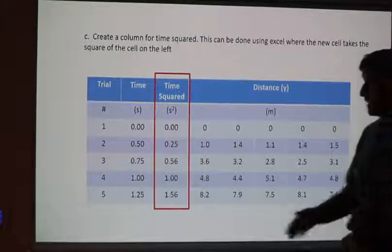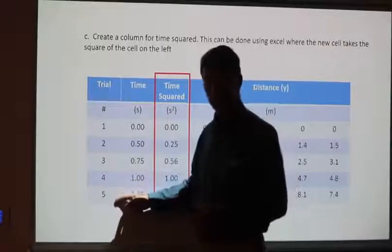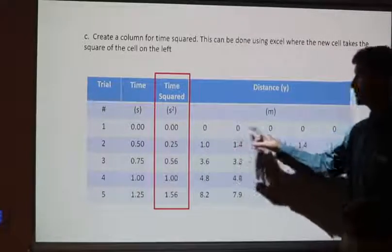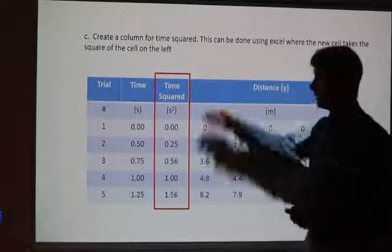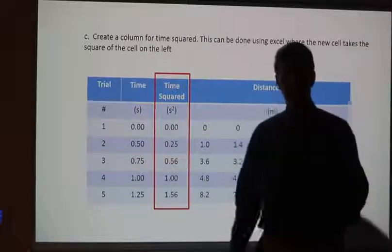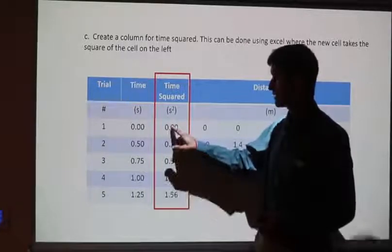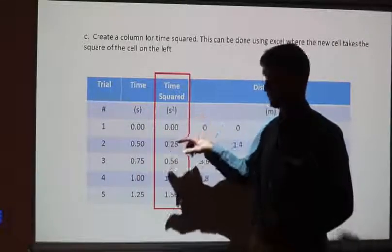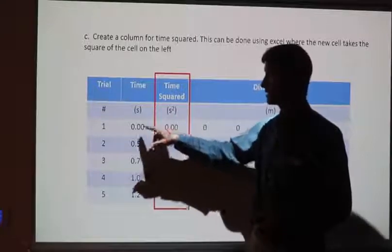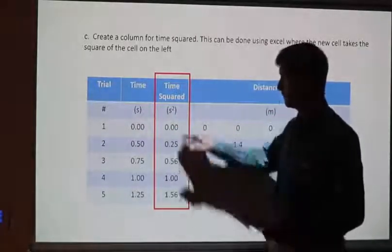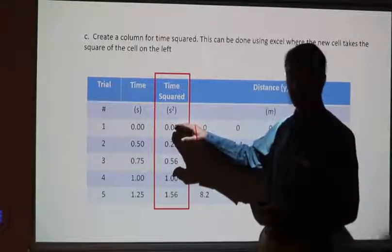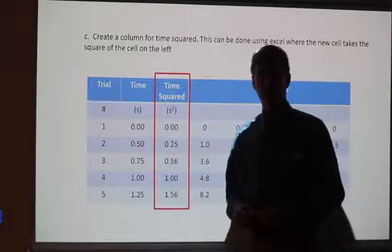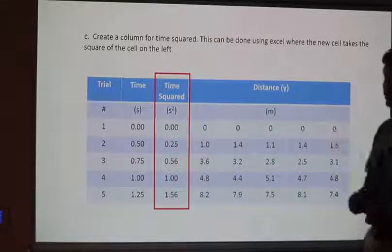The first thing is to add a T squared column. These are the different measurements at different times — we did this one, two, three, four, five different times. In Excel, you make this cell equal to this cell raised to the second power using a caret, or you can say this cell equals this cell times itself. If you highlight the cell and do a fill down, it will do the calculations for everything.